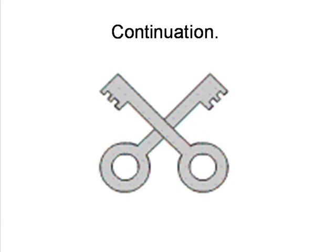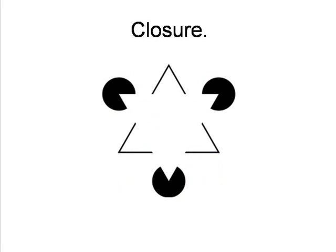The principle of continuation refers to the tendency to see directionality in arrays of objects, and so assume a coherent continuation of an existing pattern. Thus, in this picture, we see a second key behind the first, and believe it to be whole. Finally, the law of closure occurs when we see what we think is a familiar or coherent pattern, even with some of the parts missing from our view, so that we fill in the missing bits in our minds and perceive the simplest and most satisfying gestalt.